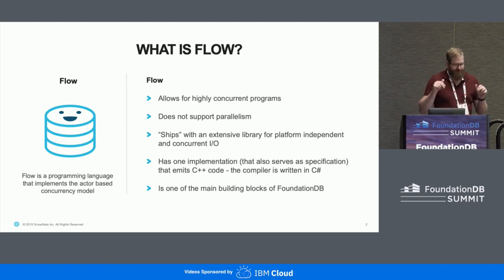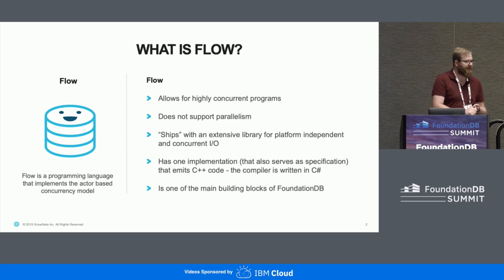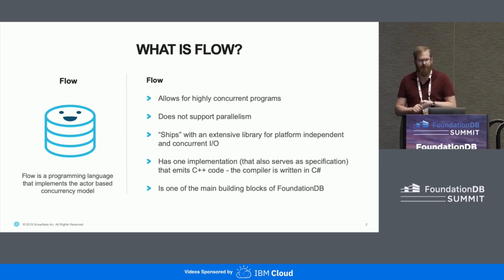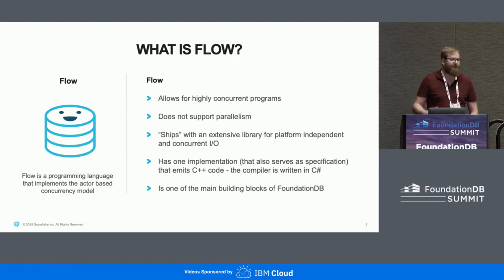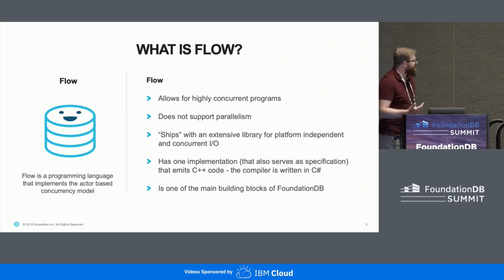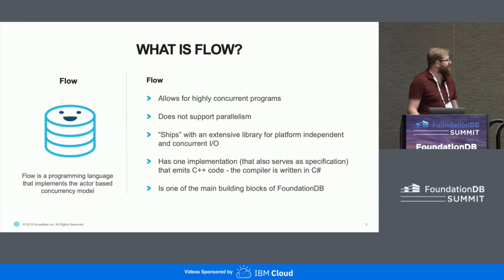It ships with an extensive library for platform-independent IO — 'ships' is in quotes because we don't really ship Flow. You could also say it ships with a distributed database. It has exactly one implementation, at least as far as I'm aware of. This implementation serves as the specification because there's no specification, and it's a C# compiler that emits C++ code. It is one of the main building blocks of FDB because all of core FDB is written in Flow.